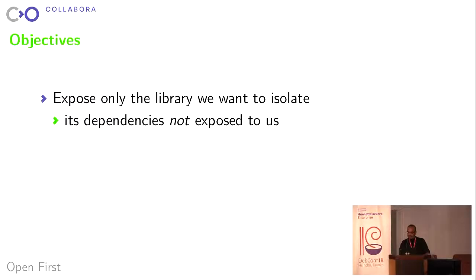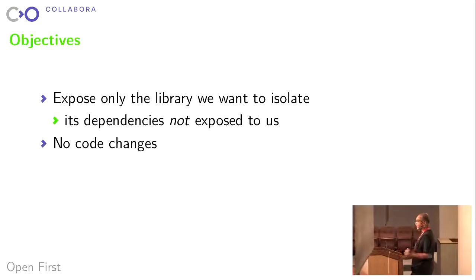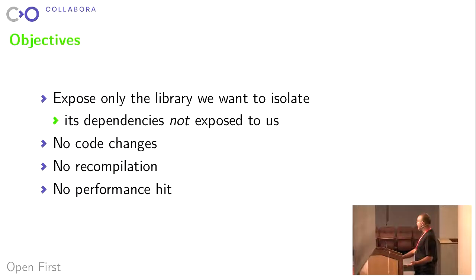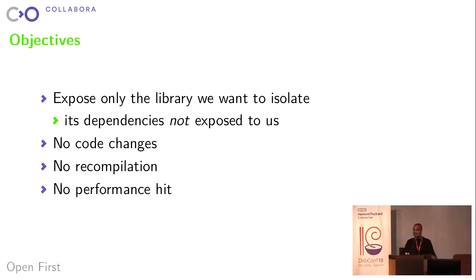Let's go through our objectives. We want to expose only the library we want to isolate — the segregated link library — and its dependencies should not be exposed to us. We don't want to make code changes in the application, because obviously that's a non-starter. No recompilation for the same reason. And of course, no performance hit — if there's a significant performance hit, that's probably going to be a non-starter for people.